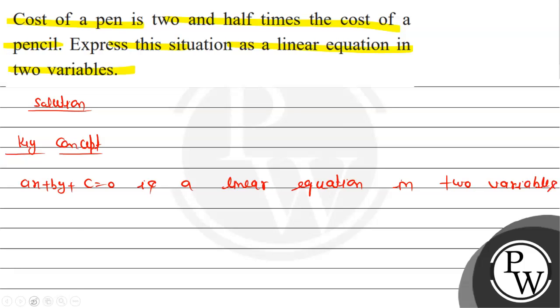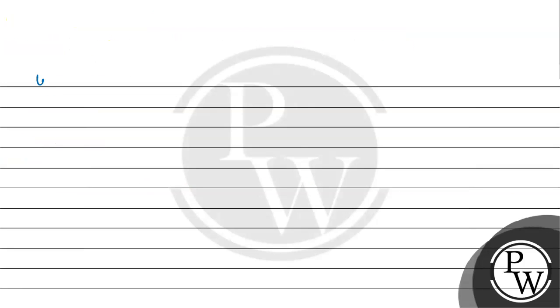So I'm using this basic concept to solve the question in two variables. The cost of a pen is two and half times the cost of a pencil. Let cost of pencil equal x.